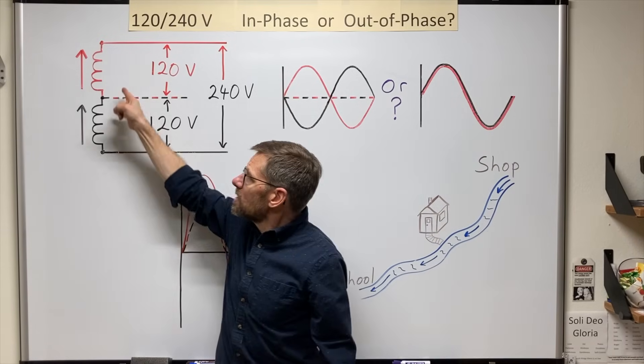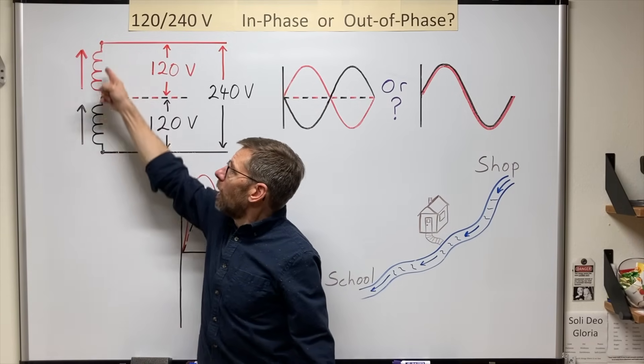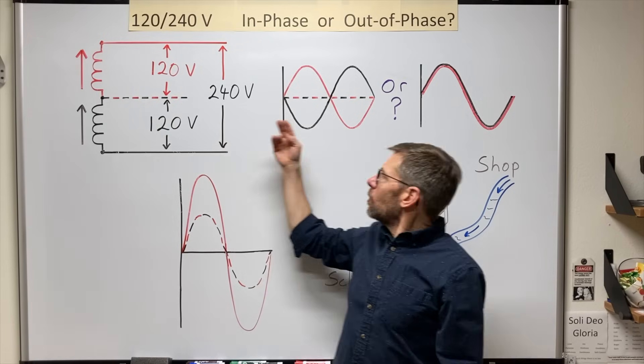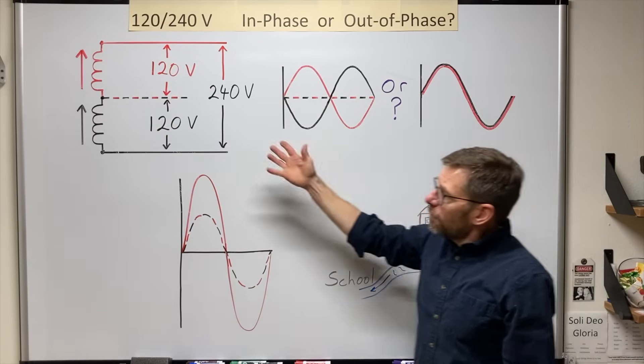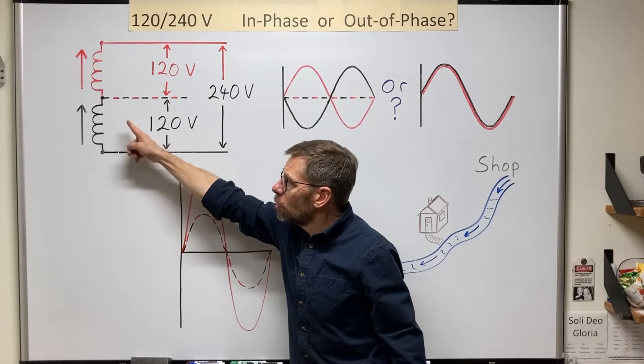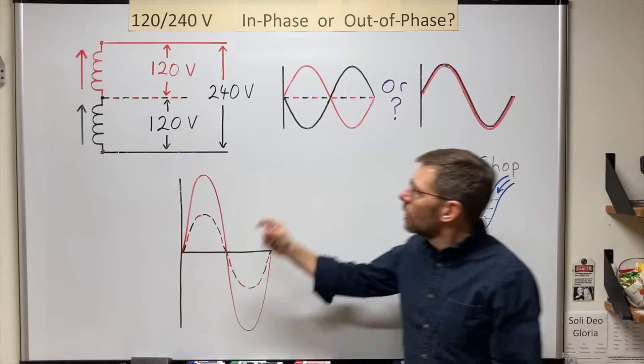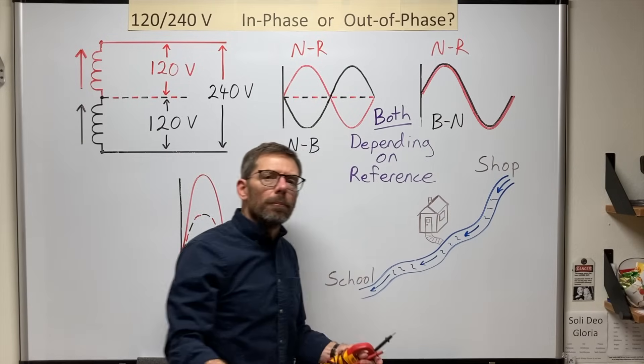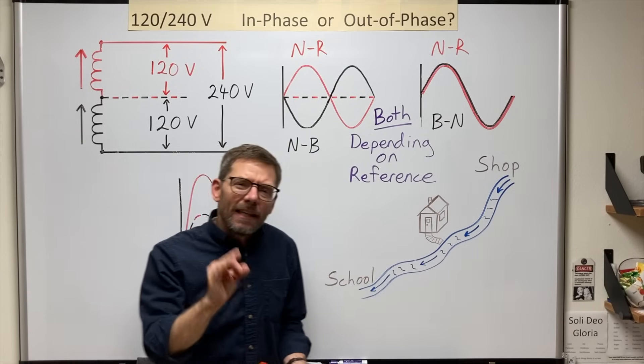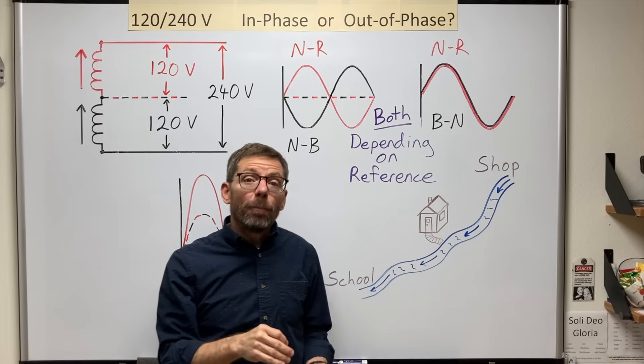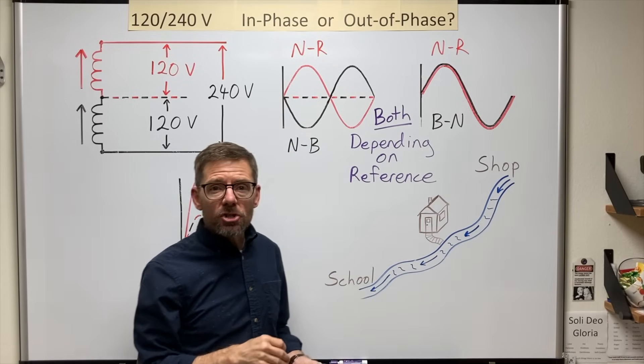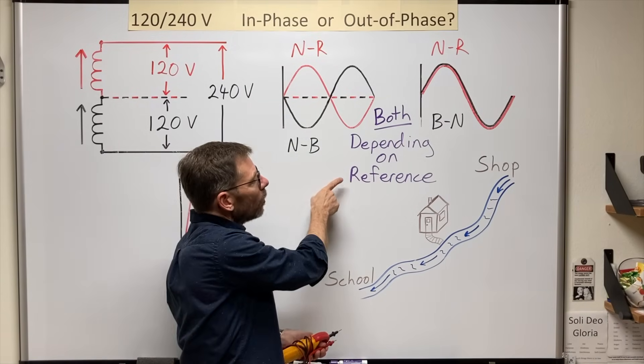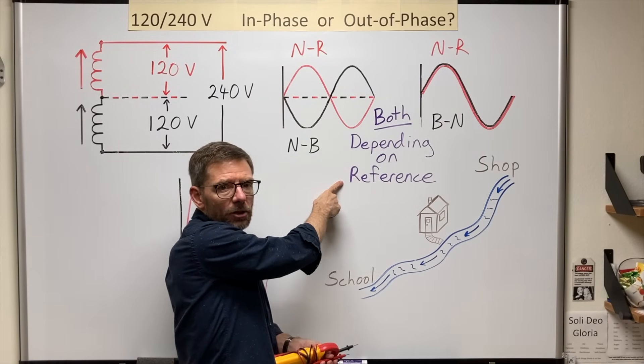So which of these two, if my system is set up correctly with the two coils in phase, should I be able to see on a scope? Both. But the key to understanding how both images could be seen on a scope is knowing what reference is being used.